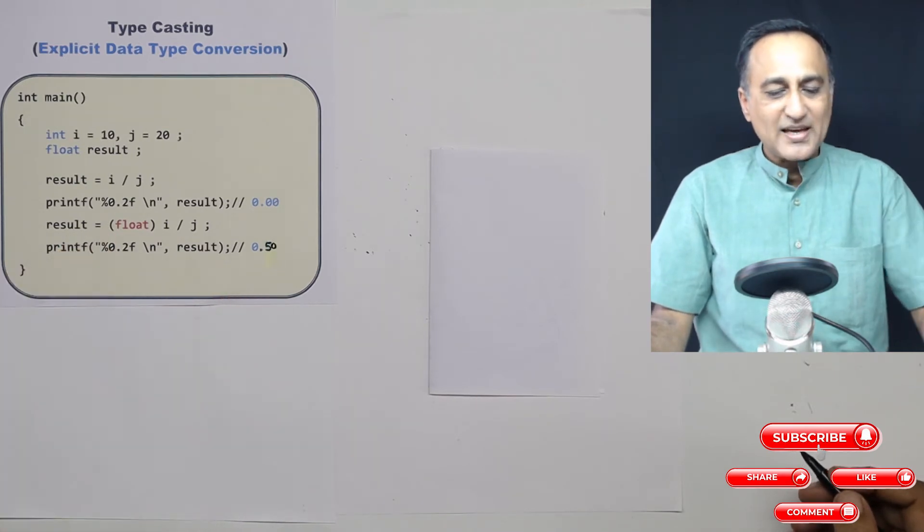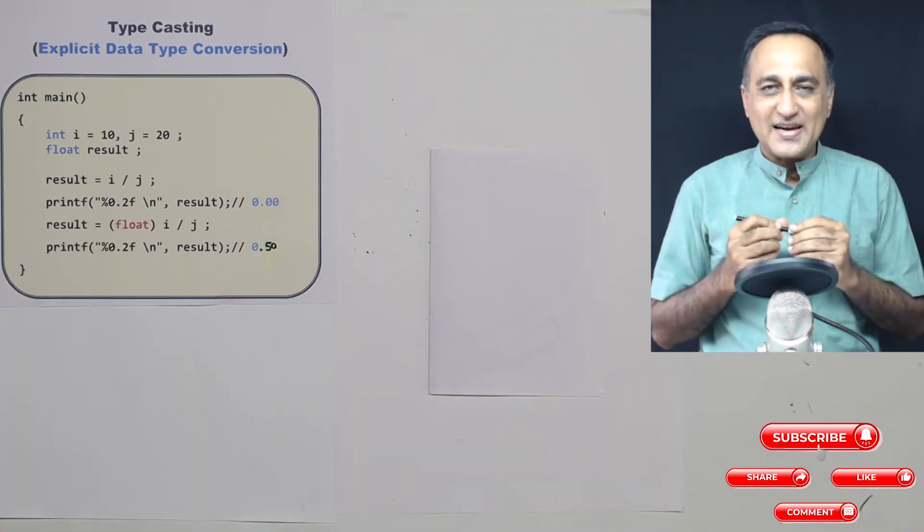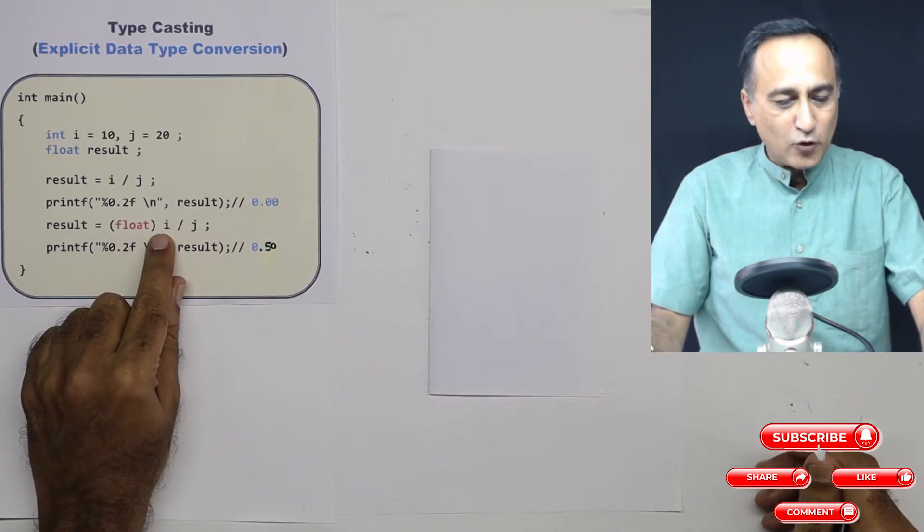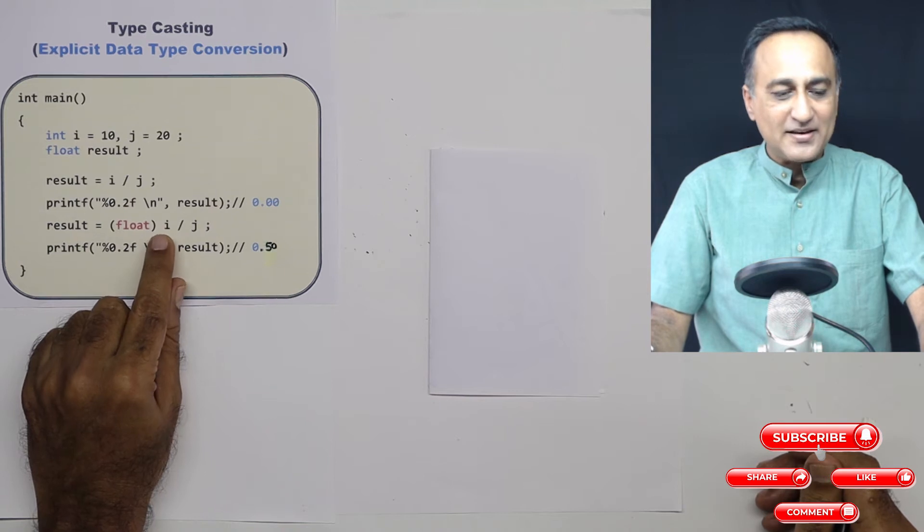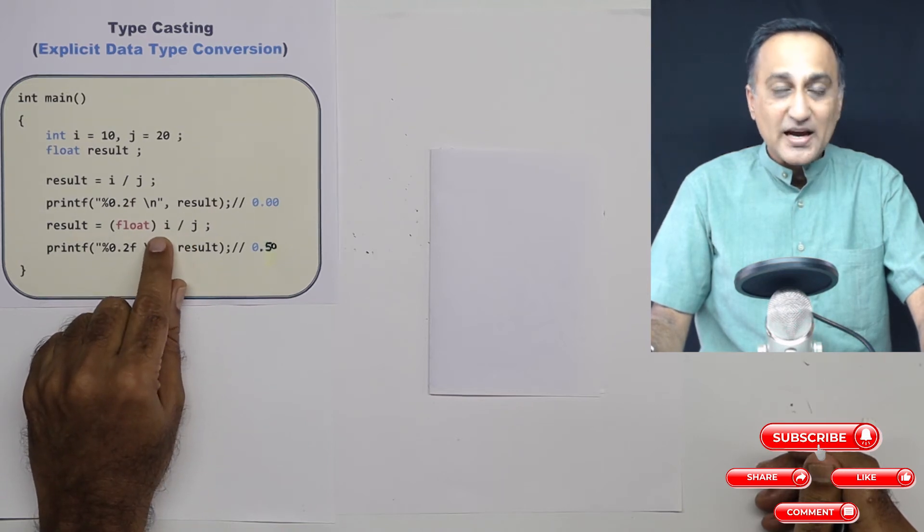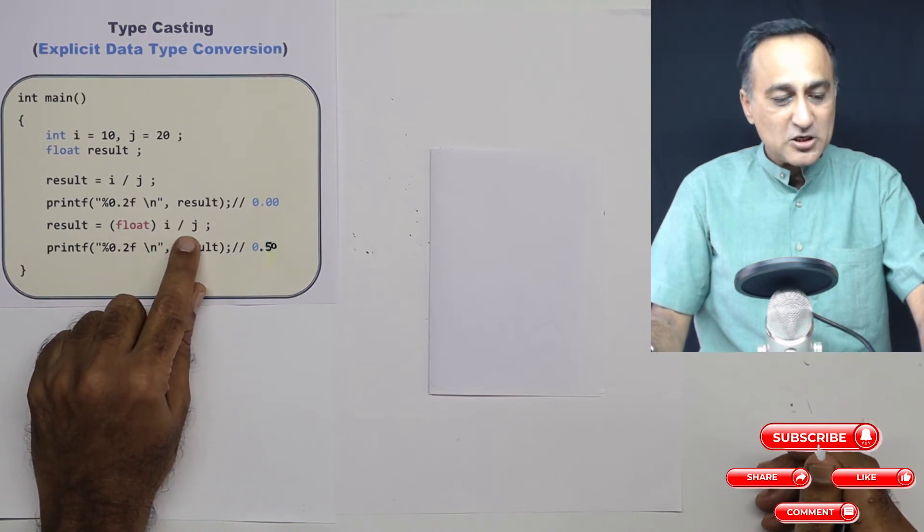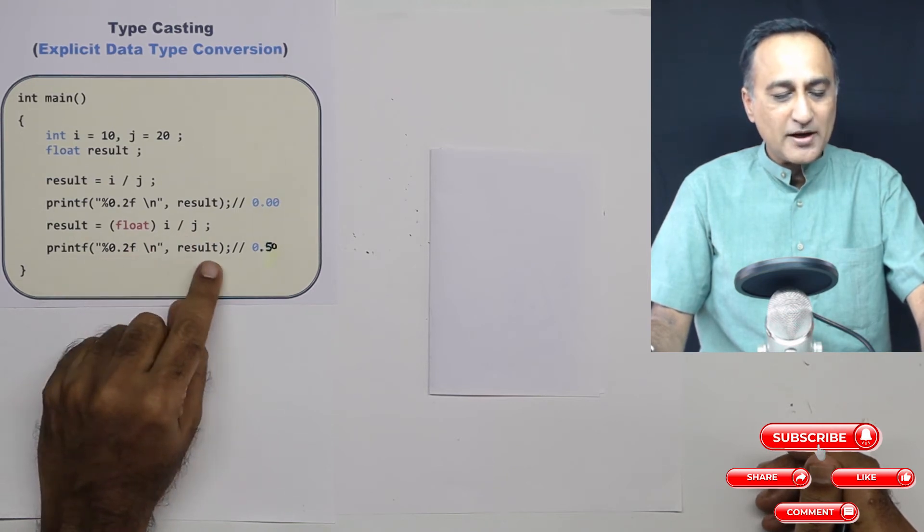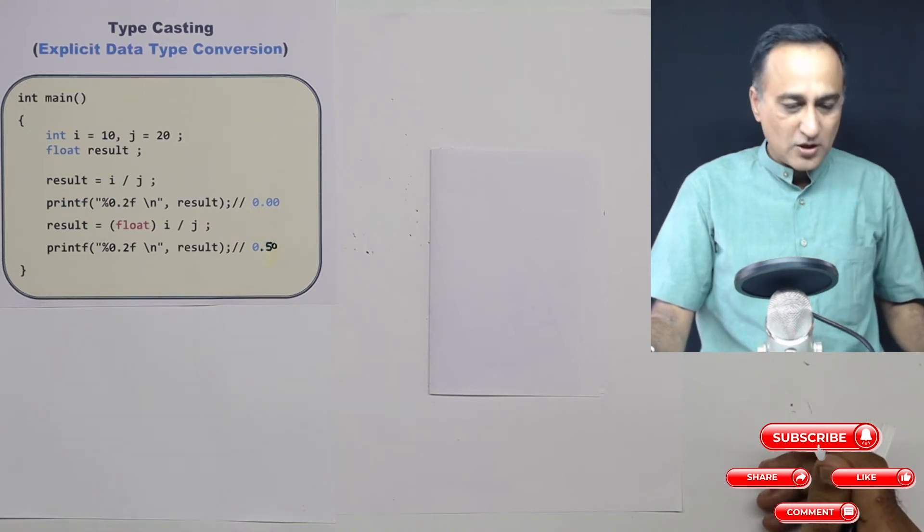So I hope this clarifies your understanding of what exactly is an explicit data type conversion. Here, the float is only acting on the i, it is not acting on the other part. But since i becomes a floating point number, j also ends up becoming a floating point number, and that's when you print the result, you're seeing a 0.50.